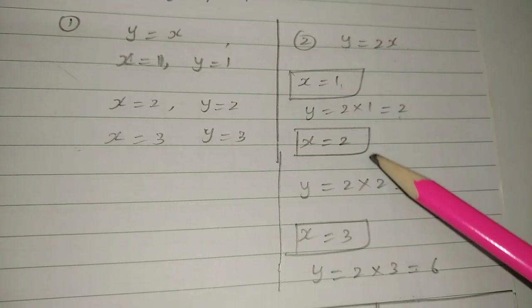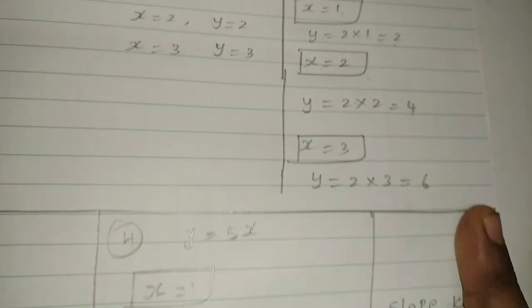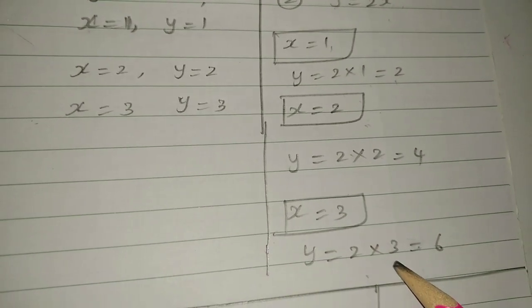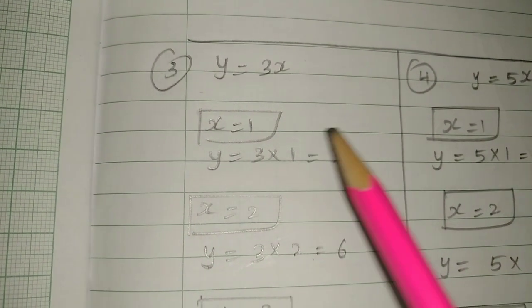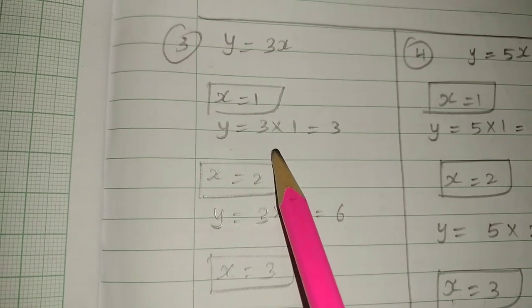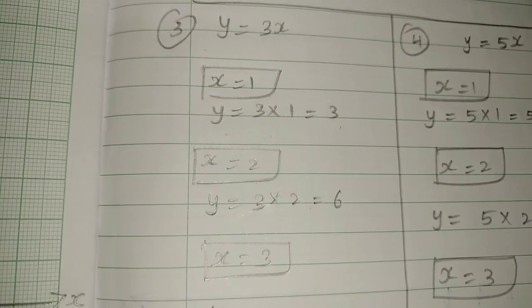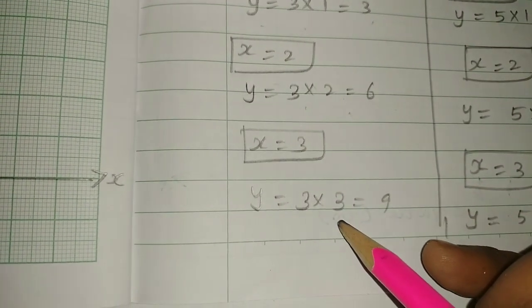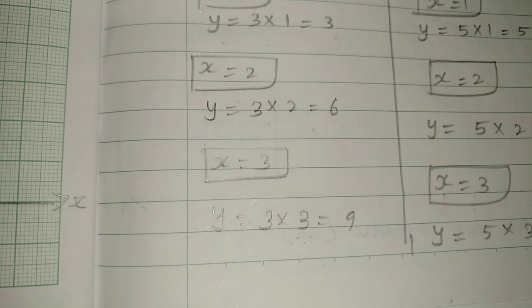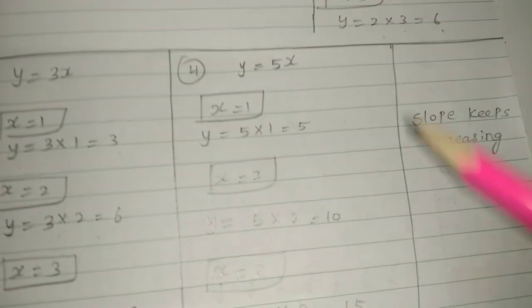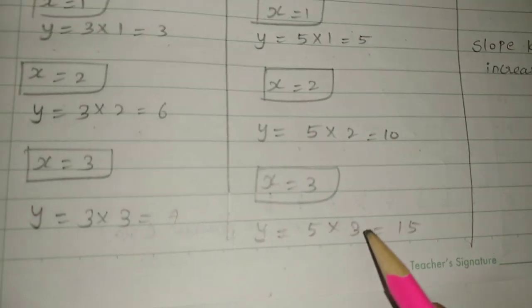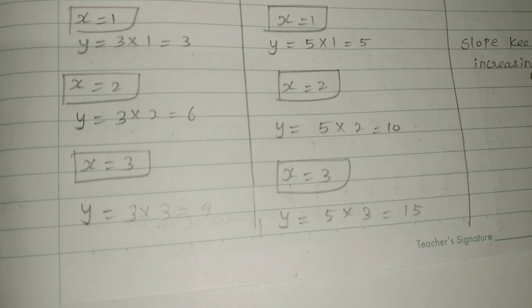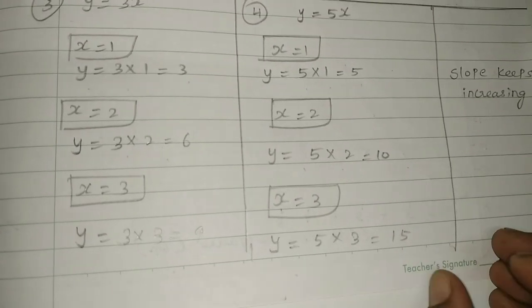For y = 3x: when x = 1, y = 3; when x = 2, y = 6; when x = 3, y = 9. For y = 5x: when x = 1, y = 5; when x = 2, y = 10; when x = 3, y = 15. Note that some values like 15 may go beyond the graph scale.